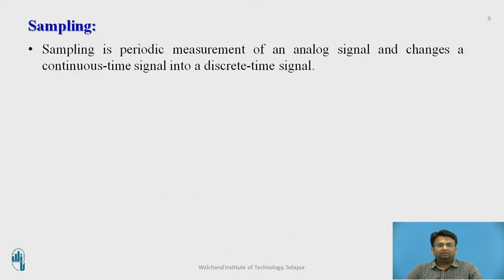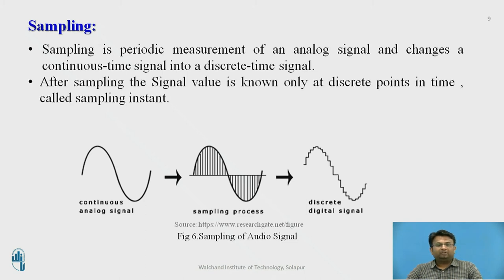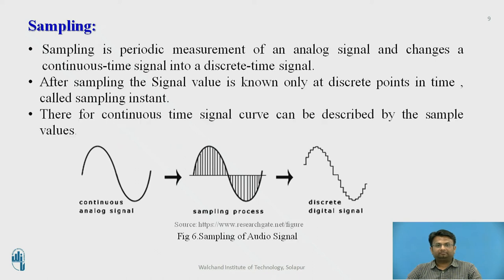Sampling is a periodic measurement of the analog signal, and changes the continuous time signal into the discrete time signal. As seen from the diagram, a continuous analog time signal is converted into a discrete digital signal by the sampling process. After sampling, the signal value is known only at discrete points in time, which are called sampling instances. Therefore, the continuous time curve can be described by the sample values.